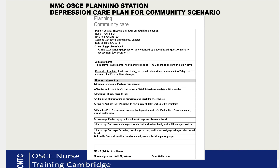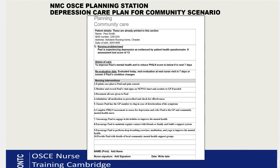Number four: administer all medication as prescribed and check for effectiveness. Number five: ensure Paul has the GP's phone number so that if he develops any deterioration of symptoms or other problems, he has a number to ring.